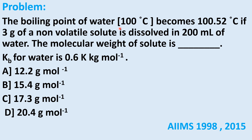The boiling point of water (100°C) becomes 100.52°C when 3 gram of a non-volatile solute is dissolved in 200 mL of water. Find the molecular weight of the solute. Kb for water is given as 0.6 Kelvin·kg per mole. Options: A) 12.2 g/mol, B) 15.4 g/mol, C) 17.3 g/mol, D) 20.4 g/mol.